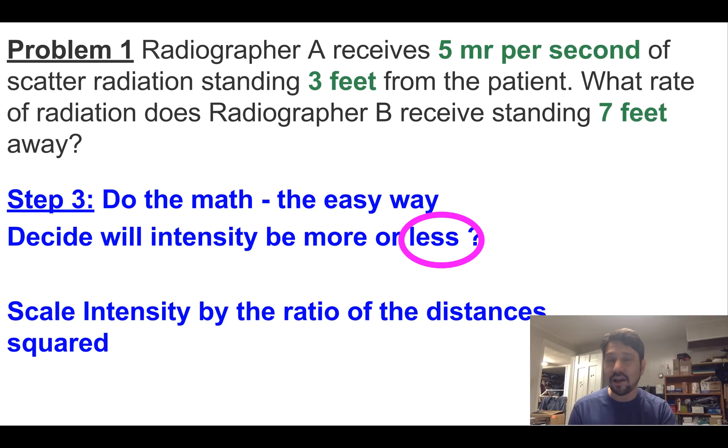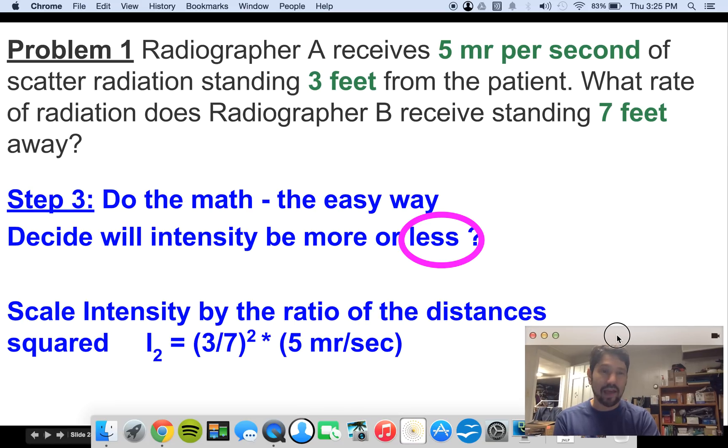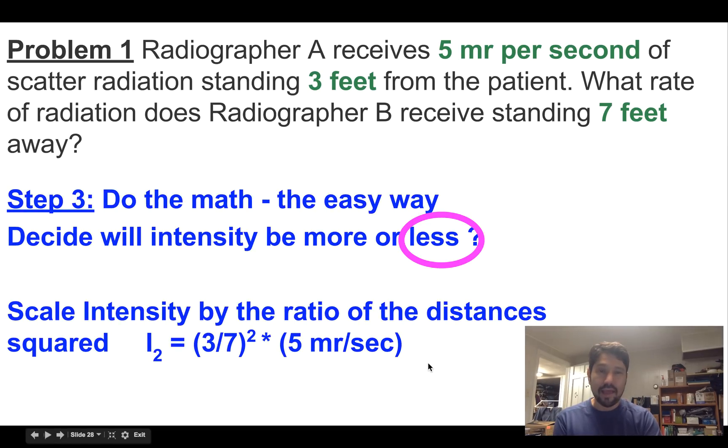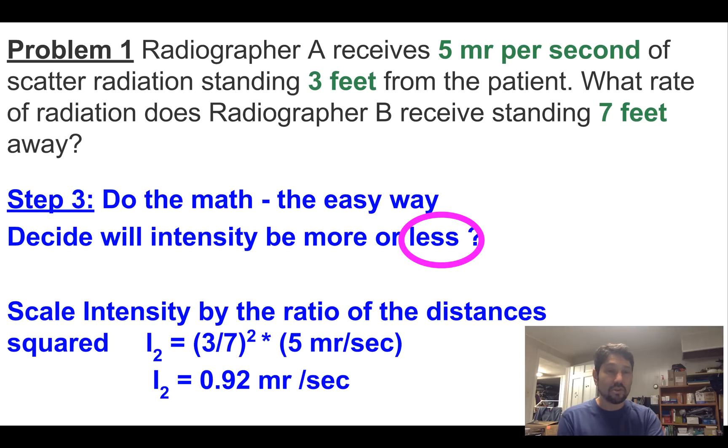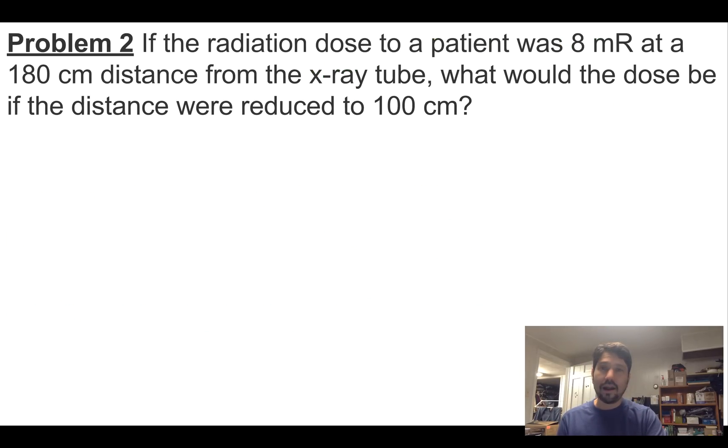And we're going to make sure that ratio is less than one, right? We can either put three over seven, which is less than one, or seven over three, and that's more than one. Well, we know our answer is going to be less intense, so we're going to put three over seven squared times five millirads per second. And that gives us, what do you know, it's the same answer, 0.92 millirads a second. I like it the easier way. Let's make it obvious for our teacher.